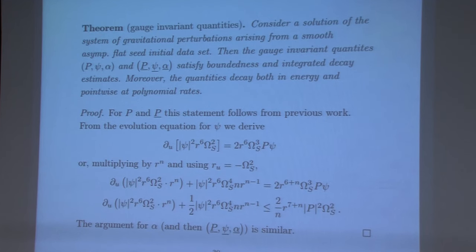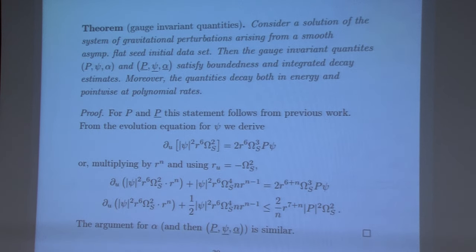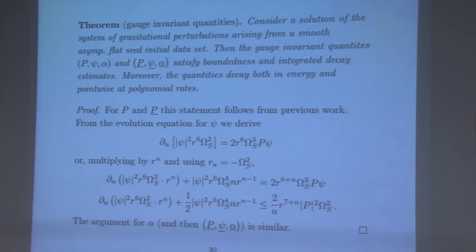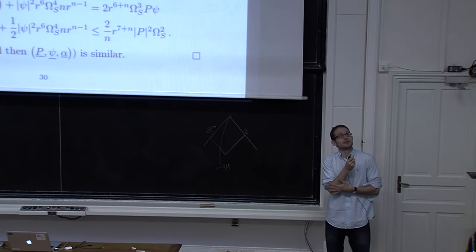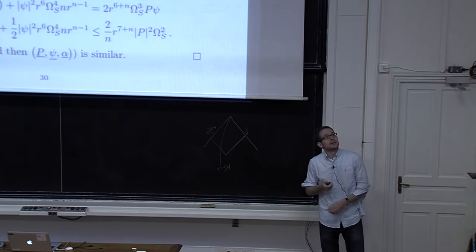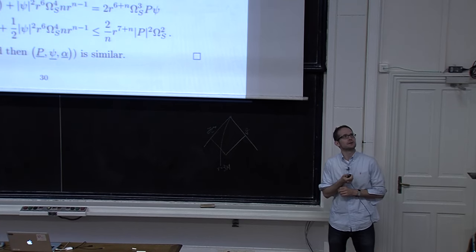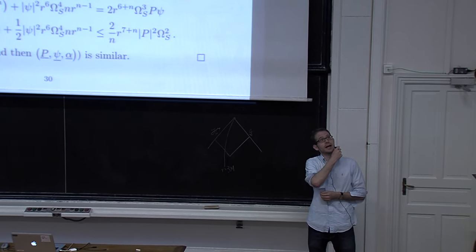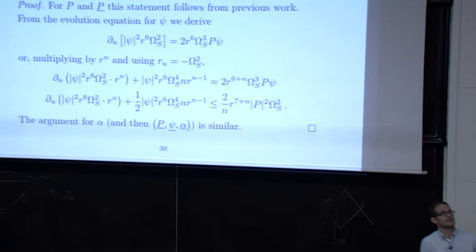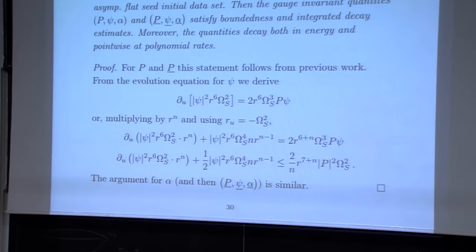As far as the gauge-invariant quantities are concerned, once somebody gives you the quantity P or tells you the transformation, it's really very easy to get decay for them. In particular you have as a corollary that solutions to the Teukolsky equation decay inverse-polynomially in time, which was previously not known. That's it for the gauge-invariant part. But now how do we estimate the rest? That's where the interesting aspects come in.